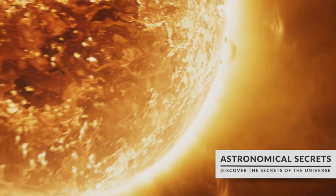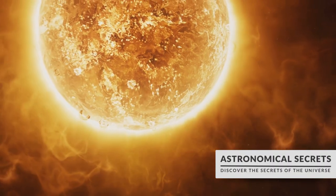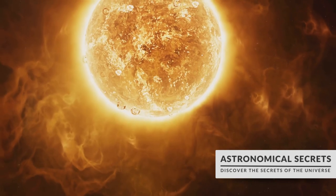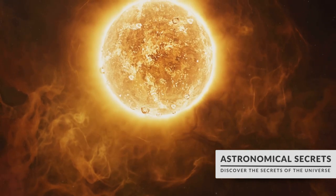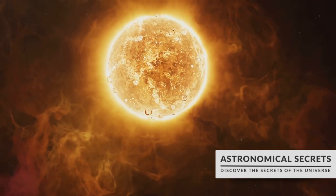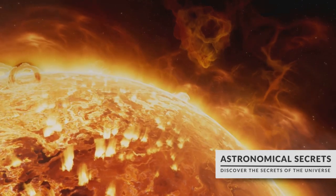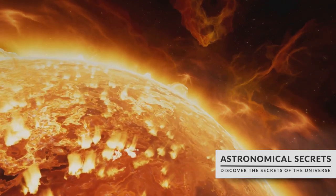Now you might wonder how these white dwarfs form. Well, stars like our sun burn hydrogen in their cores to produce helium through a process called nuclear fusion. Over time, the hydrogen gets depleted, and the star begins to expand, becoming a red giant.